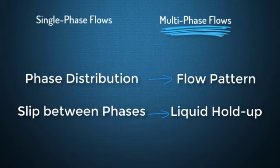Phase distribution always causes flow pattern regimes, and flow regimes or flow patterns change in the flow path. Slip between phases always causes liquid holdup in branch lines and pipelines.